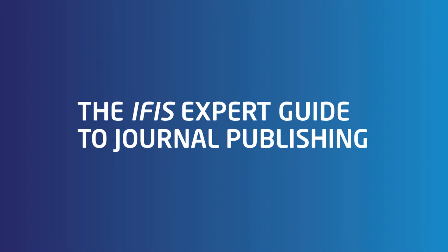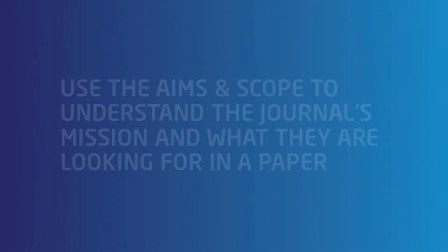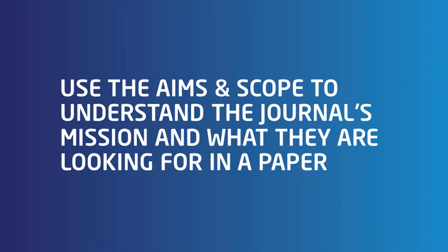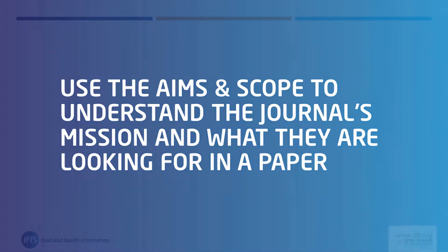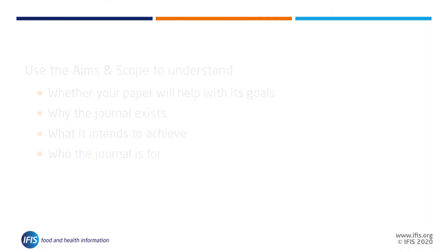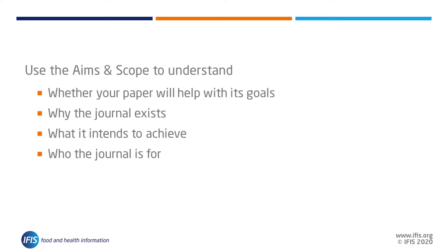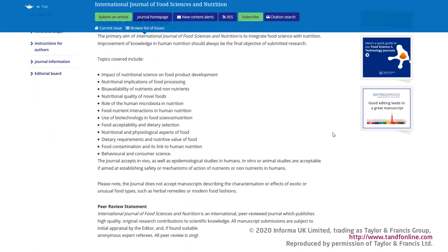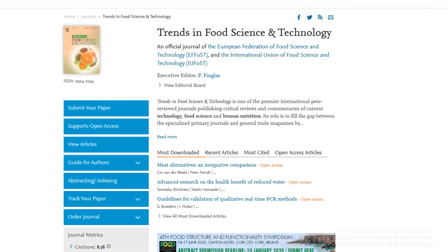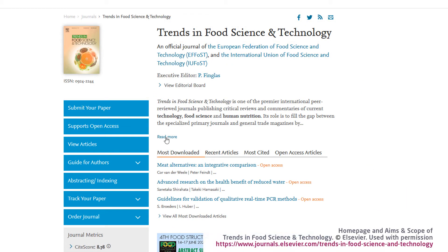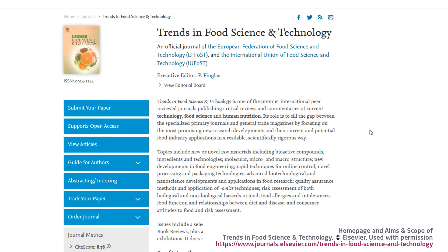In this part of our IFIS Expert Guide to Journal Publishing series, we will be looking for key information to understand how your paper will match a journal's scope and help further its goals — why the journal exists, what it aims to achieve, and who it is for. Failure to properly fit the subject scope of the journal is one of the most common reasons for immediate rejection of submissions, so this is the first and most important match you need to make.